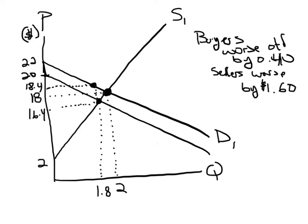So the $2 tax, the sellers are putting up with $1.60 and the buyers are putting up with $0.40. That's when the tax is on the buyers.